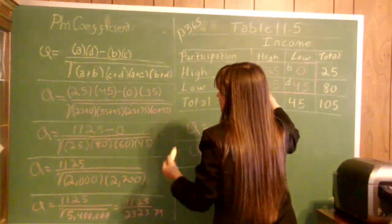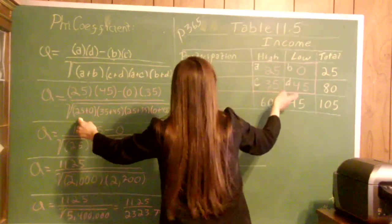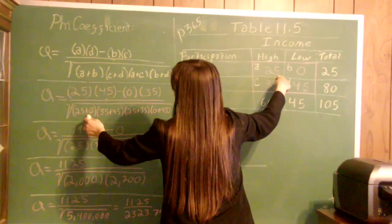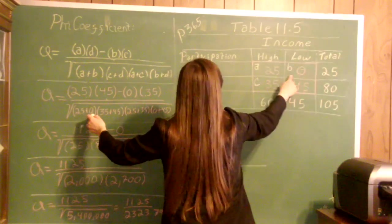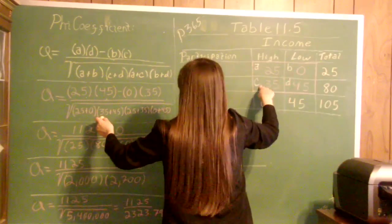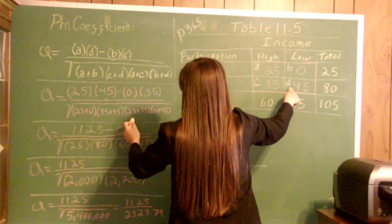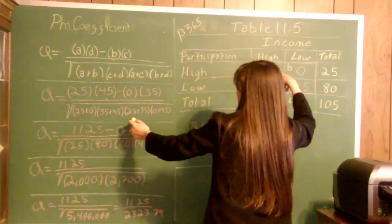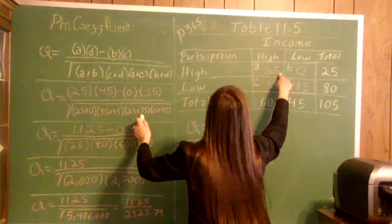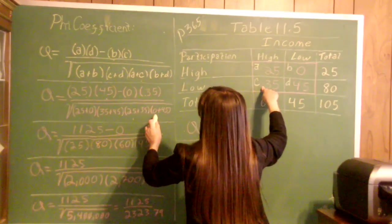That's the numerator. For the denominator, it's the square root of: A (25) plus B (0), times C (35) plus D (45), times A (25) plus C (35), times B (0) plus D (45).